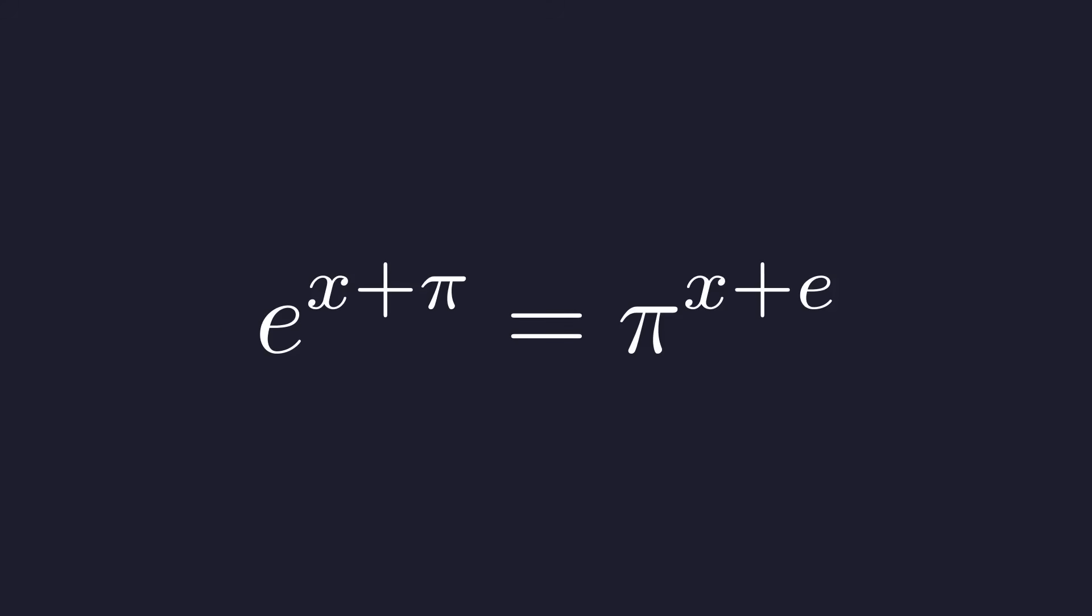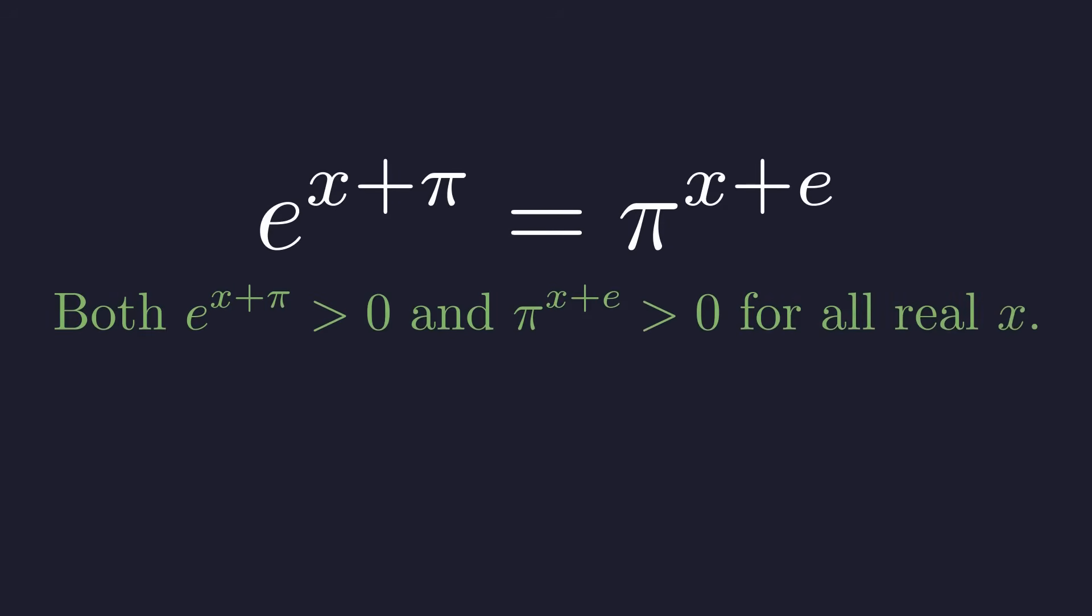The main challenge here is that our variable x is stuck up in the exponents. Before we proceed, let's confirm that what we're about to do is valid. Since the bases e and pi are both positive, both sides of the equation are strictly positive for all real values of x.